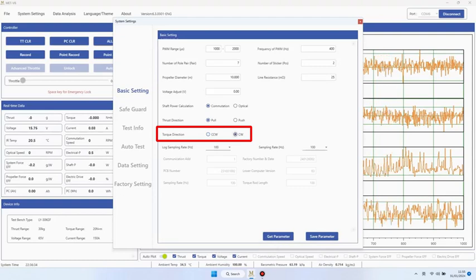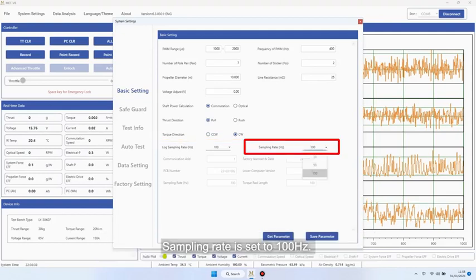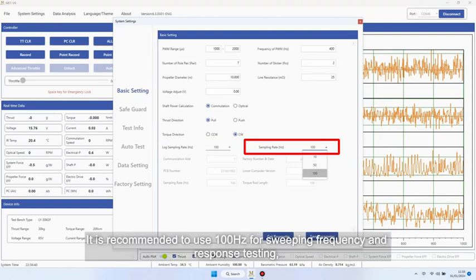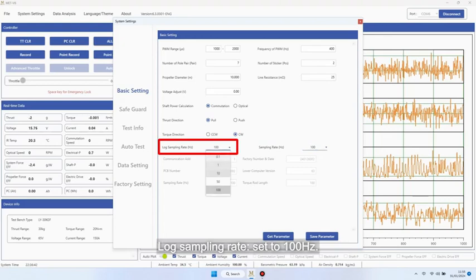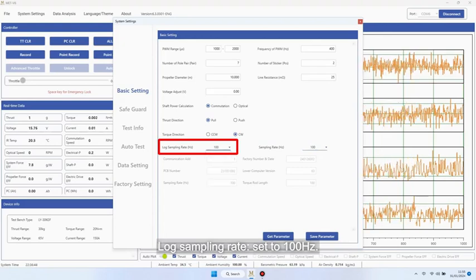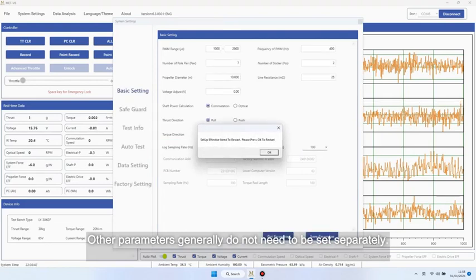Torque direction: if the propeller rotation conforms to the left-hand spiral theorem based on the direction of thrust, it is set to CW. Sampling rate is set to 100 Hz. It is recommended to use 100 Hz for sweeping frequency and response testing, while for other tests, 10 Hz is recommended. Log sampling rate set to 100 Hz.